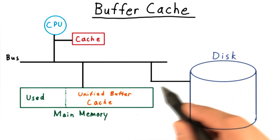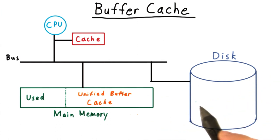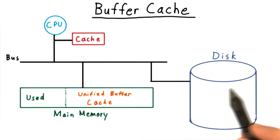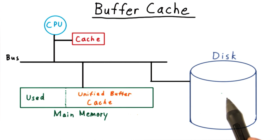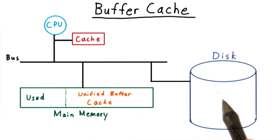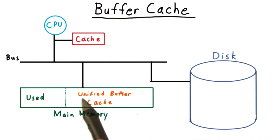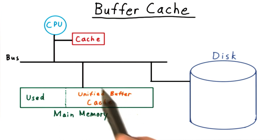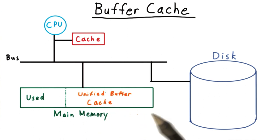When data is read from disk, it is stored in this unified buffer cache so that subsequent reads can find it there, instead of having to bother the disk again. Because disk access is often sequential, it is common also to read ahead in a file, loading up subsequent blocks to main memory so that it is there when the application needs it.